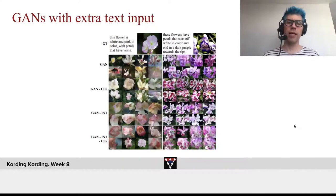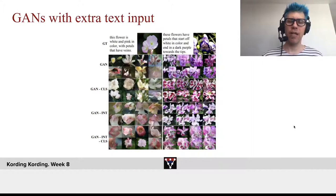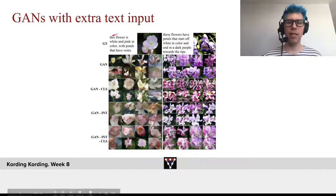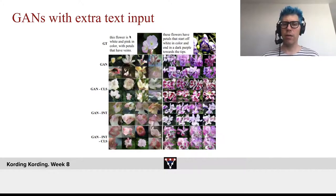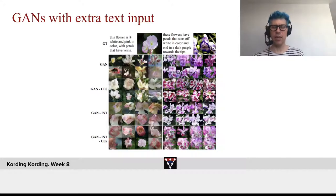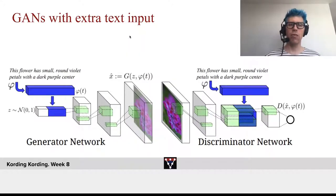Now that we've seen the controllable GAN, I want to give you a few examples of alternatives. For example, people have been building GANs that take as extra input text input. If you think about it, it's exactly the same problem. We can phrase it the same way — the text input effectively gives me a classifier that tells me what kind of content is in something, and I can then use these ideas to steer a GAN to produce the right things.